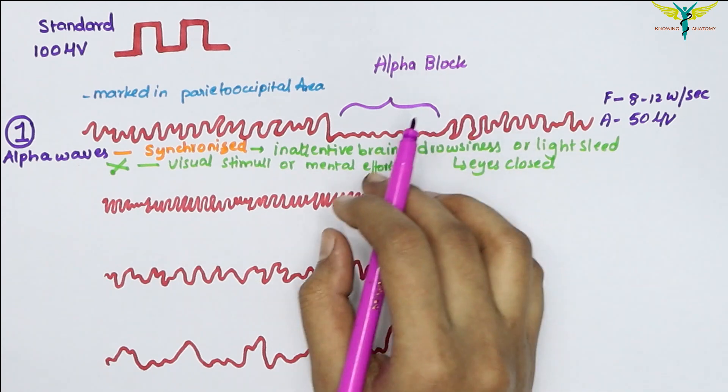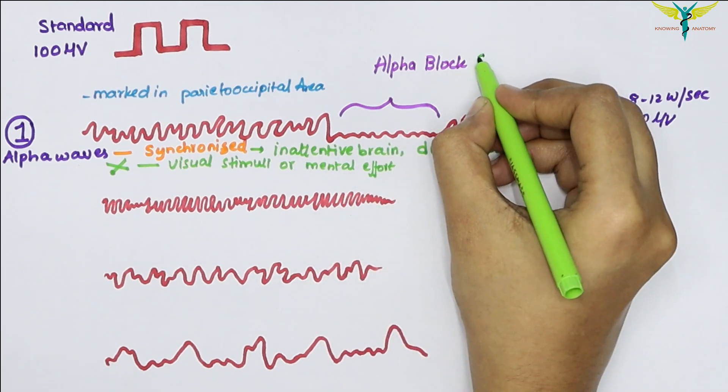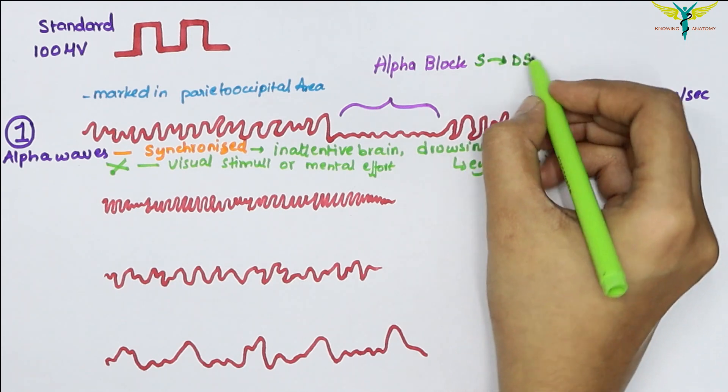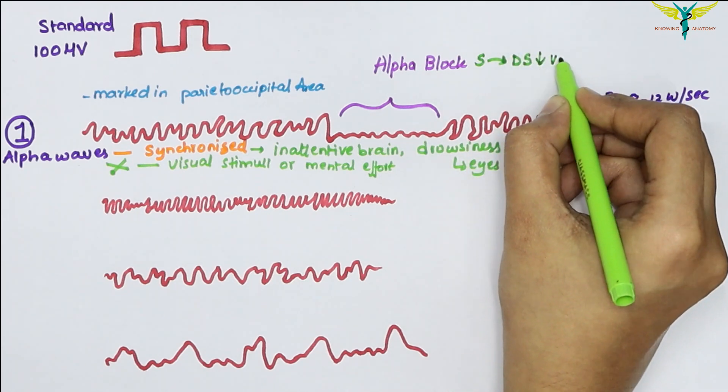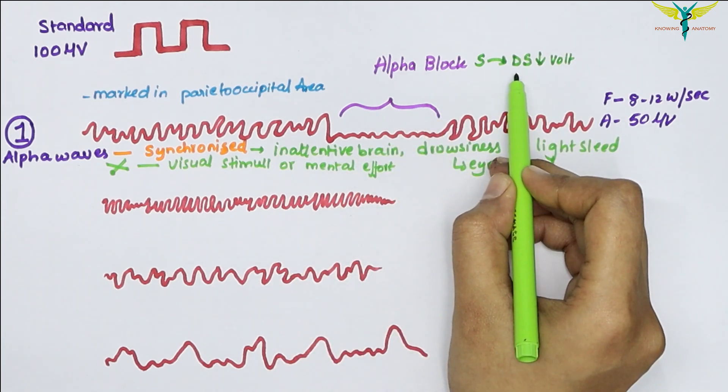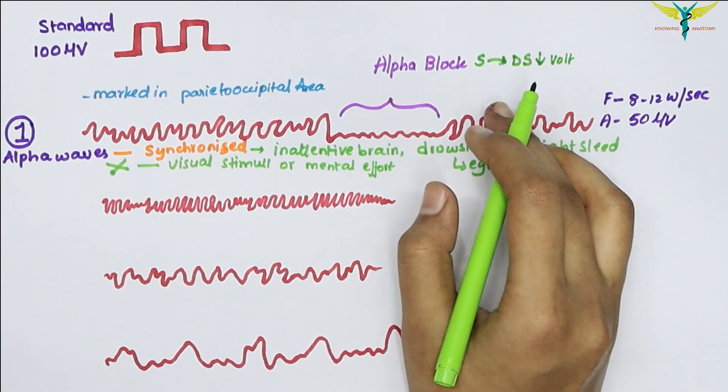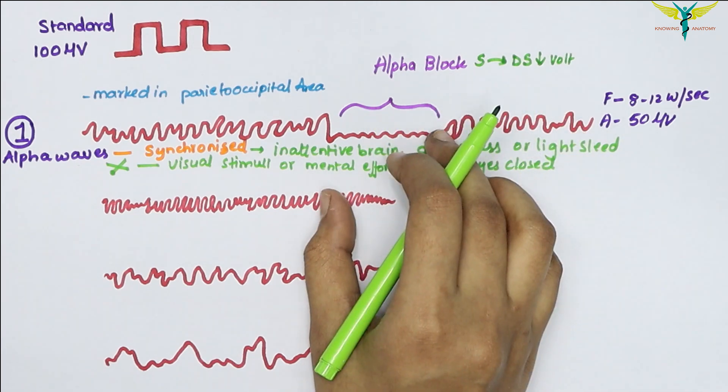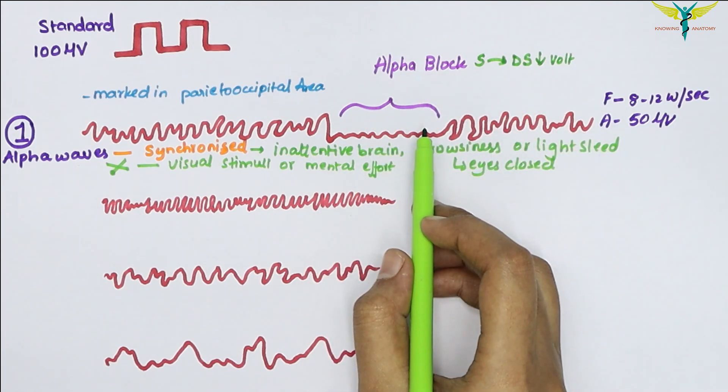The alpha block is the replacement of synchronized alpha waves by desynchronized and low voltage waves when the eyes are opened. The desynchronized waves do not have specific frequency, and it occurs due to any form of sensory stimuli or mental concentration, such as solving some mathematical problems.